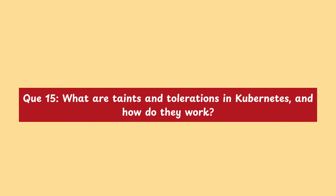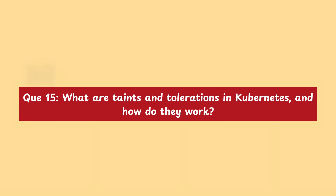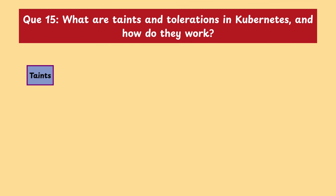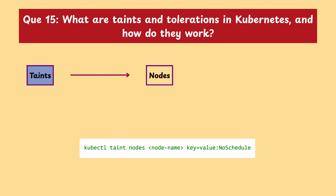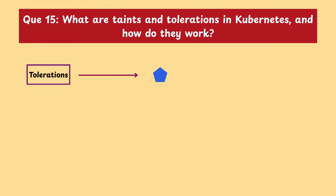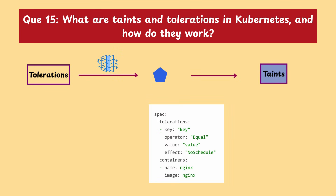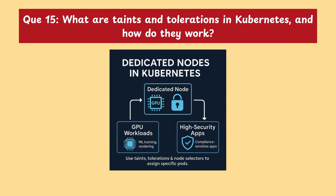Moving on with our next question: what are taints and tolerations in Kubernetes and how do they work? Taints in Kubernetes are used to mark nodes so that only certain pods can run on them. A tainted node says 'don't schedule any pods here unless they tolerate this taint.' Tolerations are added to pods to let them bypass the taint and run on those nodes. This is useful for keeping dedicated nodes for special workloads like GPU tasks or high security applications.